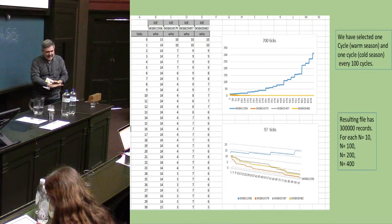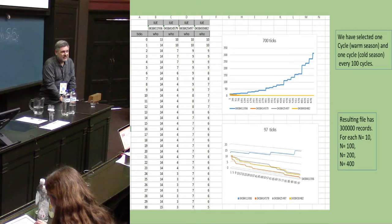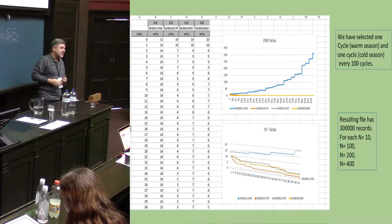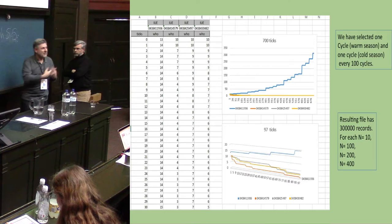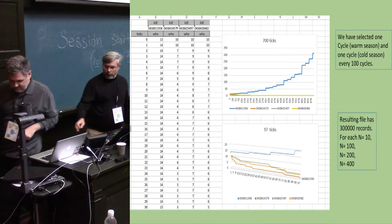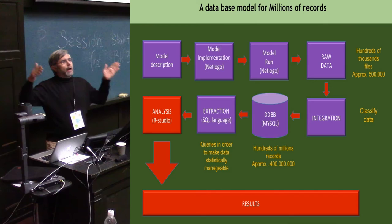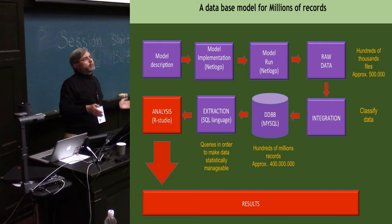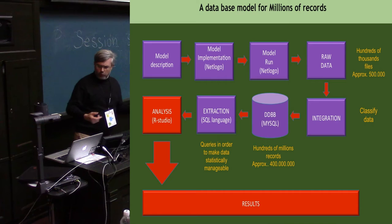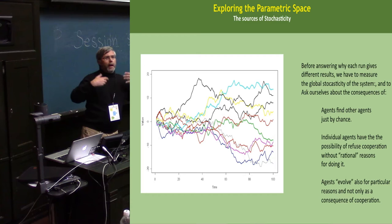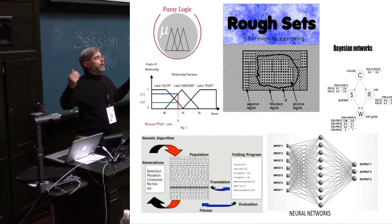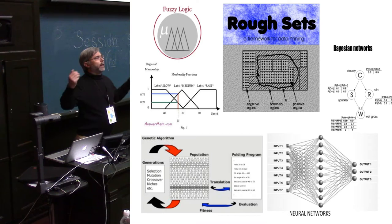A database server doesn't do analysis, but R for instance and statistic tools are able to make all the data analysis. Now we have converted an initial database of billions of data into just a single database with 30,000 characteristics of ticks. Now we can begin to do more classical statistical tests.